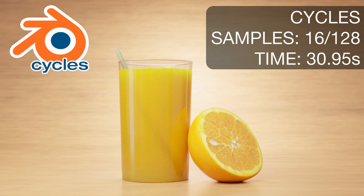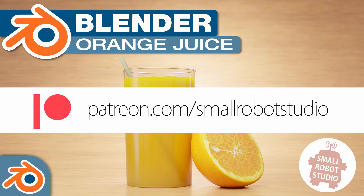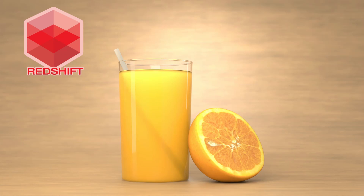Cycles handled the subsurface scattering really well and it was easy to set up in Blender. I haven't used Cycles a whole lot compared to RenderMan or Redshift, but I'm finding it very easy to pick up — when you've used one rendering engine there are a lot of similar workflow concepts that carry over. If you want to learn how to render the orange juice in Cycles, I have a tutorial available on YouTube, and the assets are available on Patreon this month for only five dollars.